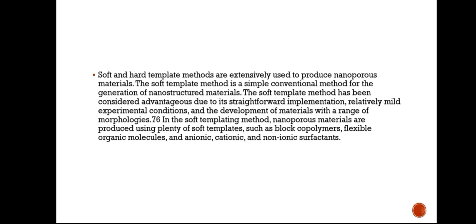Another method is the soft and hard template method. These methods are extensively used to produce nanoporous materials. The soft template method is a simple and conventional method for generating nanostructured materials, considered advantageous due to its straightforward implementation, relatively mild experimental conditions, and the development of materials with a range of morphologies. Nanoporous materials are produced using soft templates such as block co-polymers, flexible organic molecules, and anionic, cationic, and non-ionic surfactants.